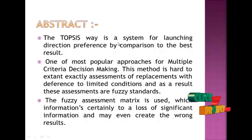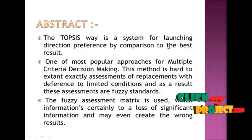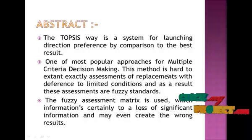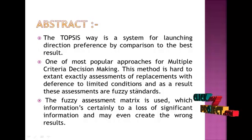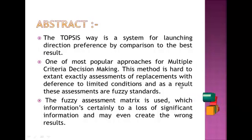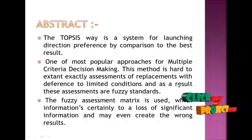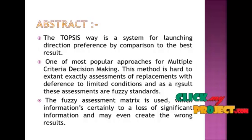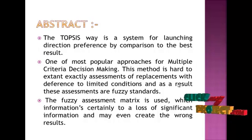Abstract. The TOPSIS method is a system for ranking direction preference by comparing the best result — it is one of the most popular approaches for multiple criteria decision making. This method is hard to extract assumptions for replacement under limited conditions, and uses a fuzzy standard. In this method, the decision making process, DMP, equals the process for multi-criteria decision making. Our TOPSIS method applies in the matrix process using four conditional probabilities to get the best result.